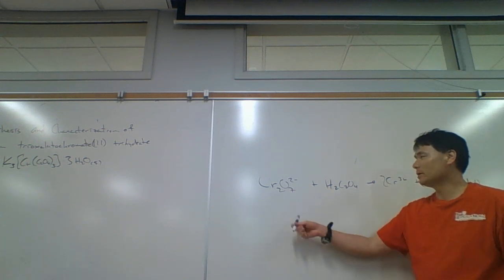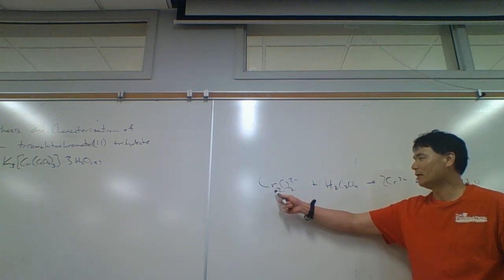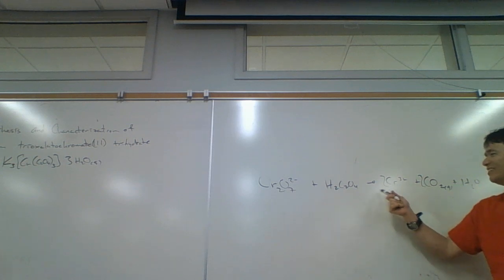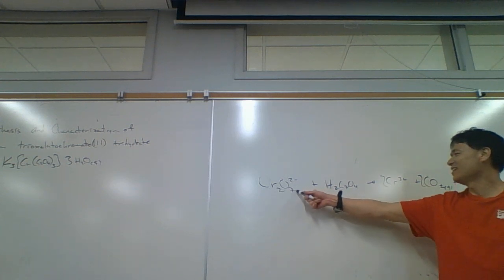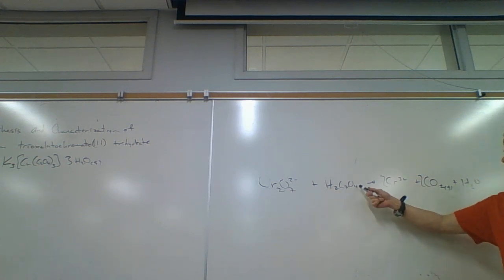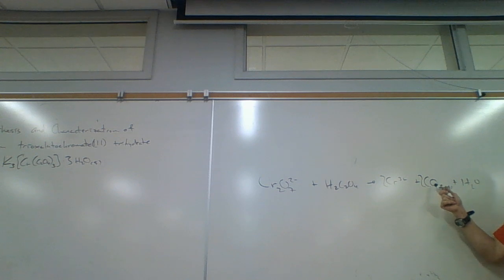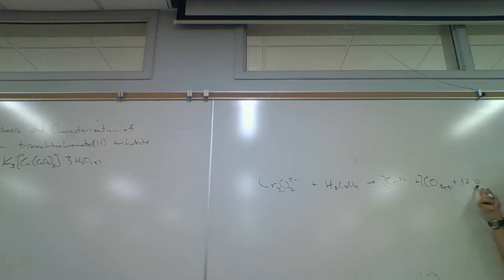The problem here is the atom's balance. Let's see: two chromiums, two chromiums, seven oxygens plus four — there's 11 oxygens — and so we got two times two is four plus one.